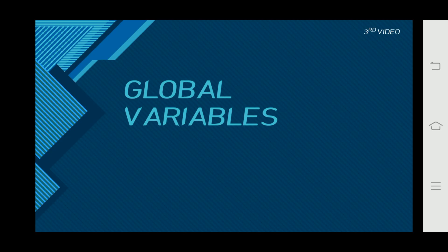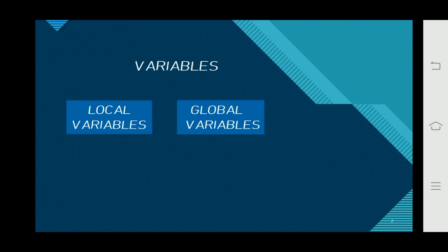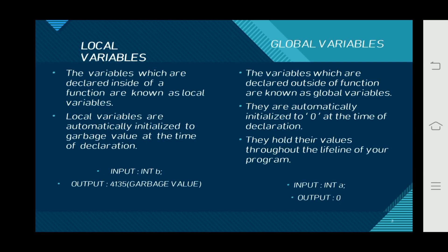Hi guys, this is Team Monoch Kumar. Now I am going to explain about global variables. As we saw in the last video about variables in C and its program, in variables there are two types of variables in C: local variables and global variables. Now let's see the difference between them.